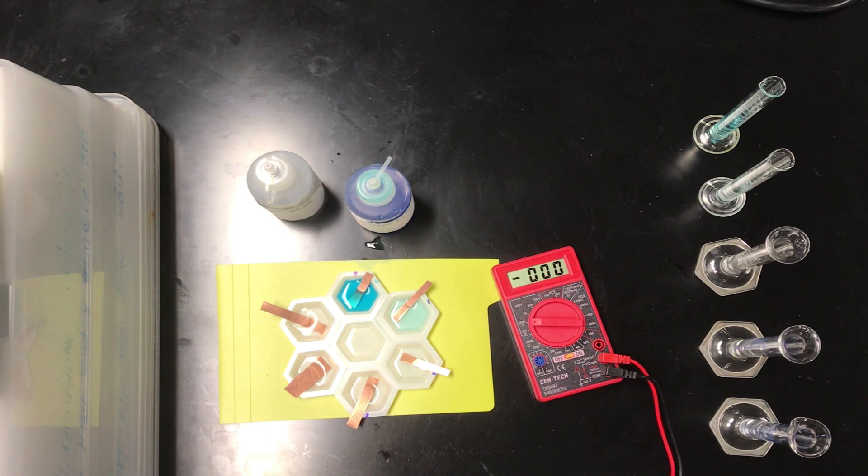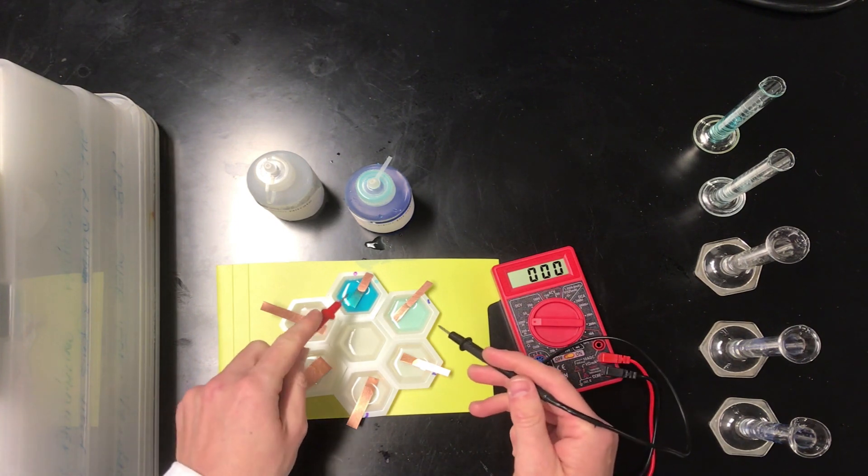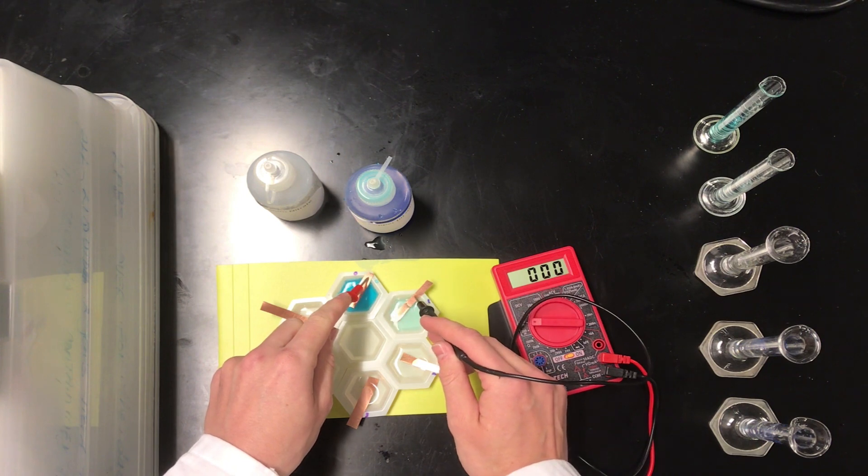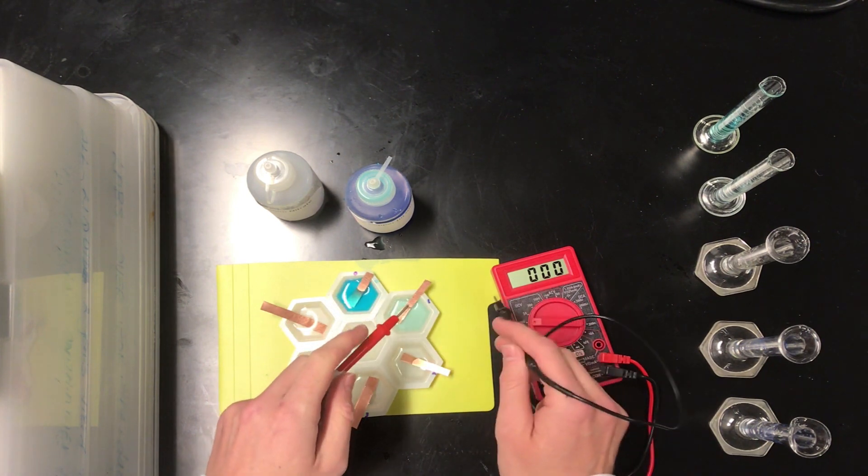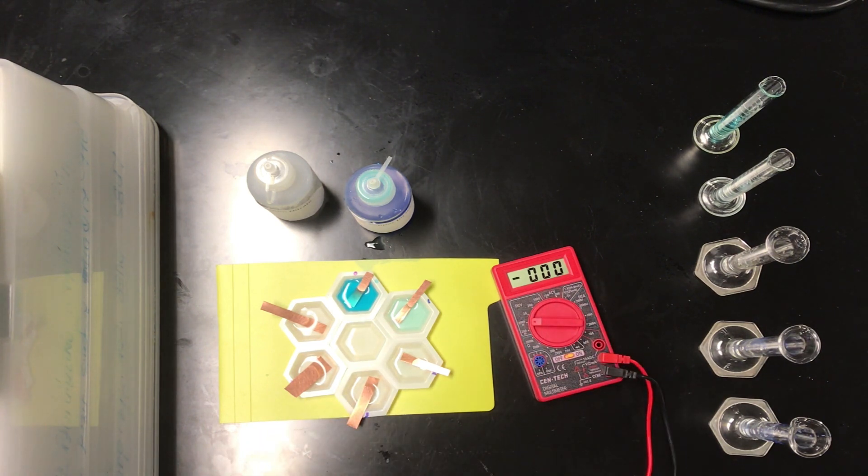Now the first thing I want to show you is that unless we connect these half cells via a salt bridge, no voltage is observed. So for example, if we connect the 1 molar half cell to the 0.1 molar half cell, a voltage of 0 volts is obtained, and you can see that on the voltmeter over here. This is reading in millivolts, a thousand millivolts corresponding to 1 volt of electrical potential difference.